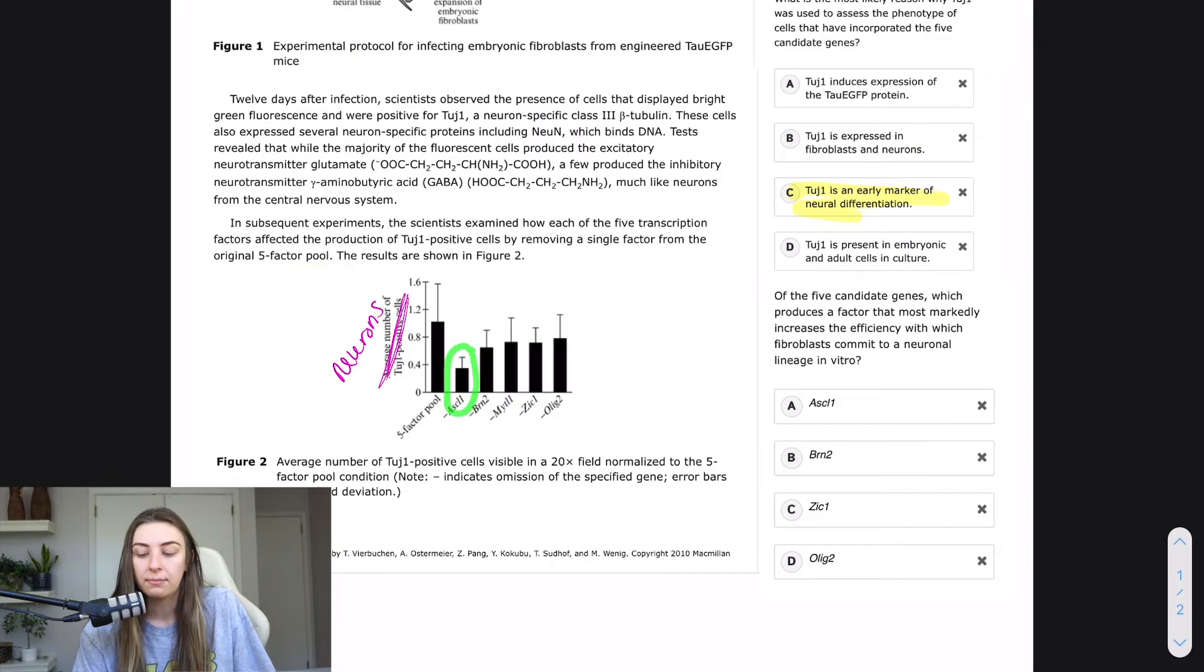So it looks like when we subtract this ASCL one, we don't have that many neurons. So it sounds like this ASCL one is going to produce a factor that increases the efficiency of which we create neurons. So that is going to be our right answer. I'm going to show y'all the next two questions. I'm not going to simplify them. I'm going to give you an opportunity to simplify them. So pause the video and then I'll show you how I simplified them myself.